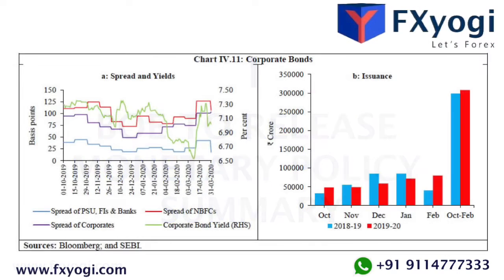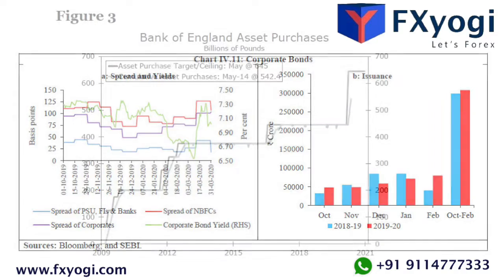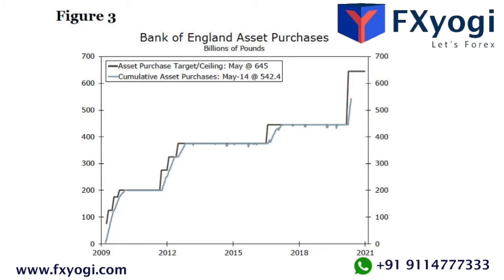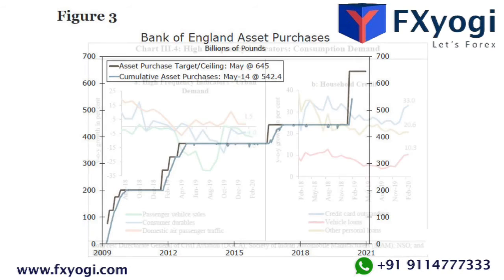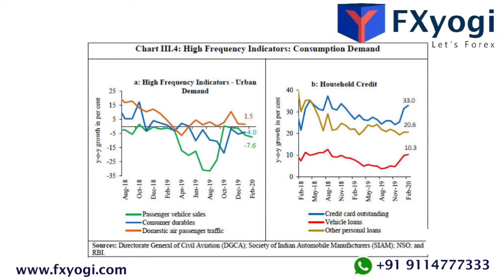The Bank of England is set to release its monetary policy summary. This vital data is released monthly. The source first released this data in August of 2015. It's among the primary tools that the MPC uses to communicate with investors about monetary policy.